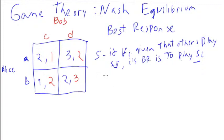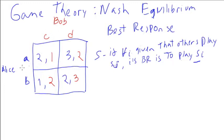The way you find a Nash equilibrium is to check each box. Let's look at box AC: if Bob plays C, Alice's best response is to play A, since she chooses between A or B and gets 2 vs 1, so she plays A. Then you check Bob: if Alice plays A, Bob looks at 1 or 2, so he should play D.